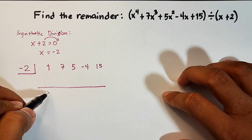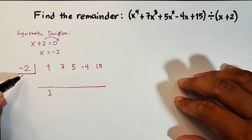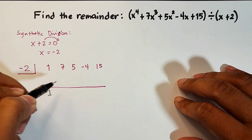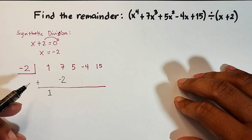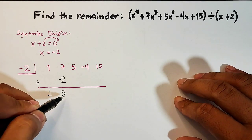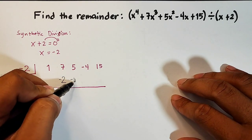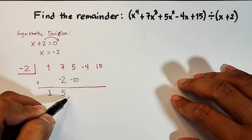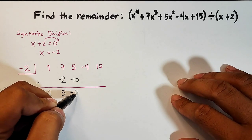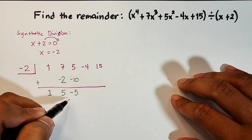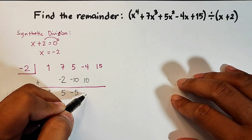Bring down the 1. Then multiply it by negative 2: 1 times negative 2 is negative 2. Add: 7 plus negative 2 is 5. Multiply again: 5 times negative 2 is negative 10. Add: 5 plus negative 10 is negative 5. Multiply again: negative 5 times negative 2 is positive 10. Add: negative 4 plus 10 is 6.